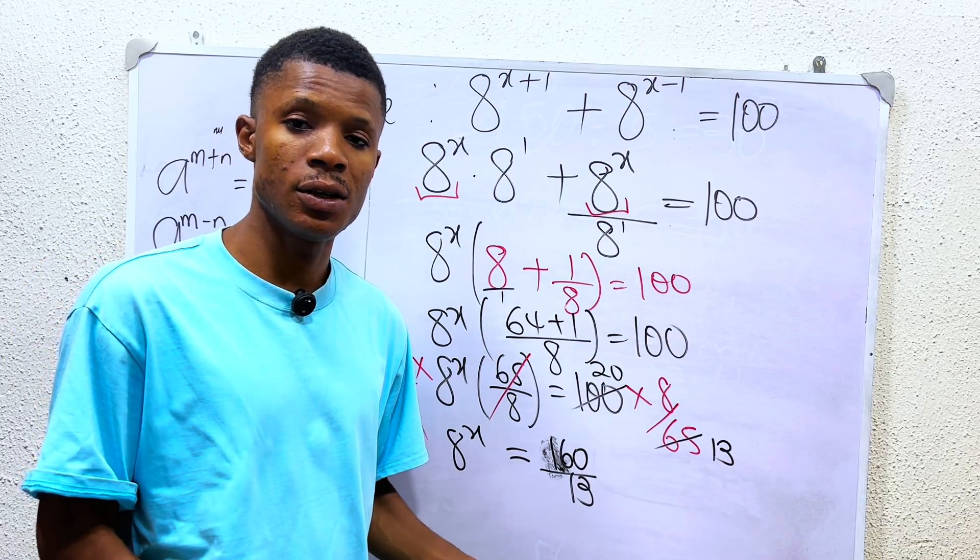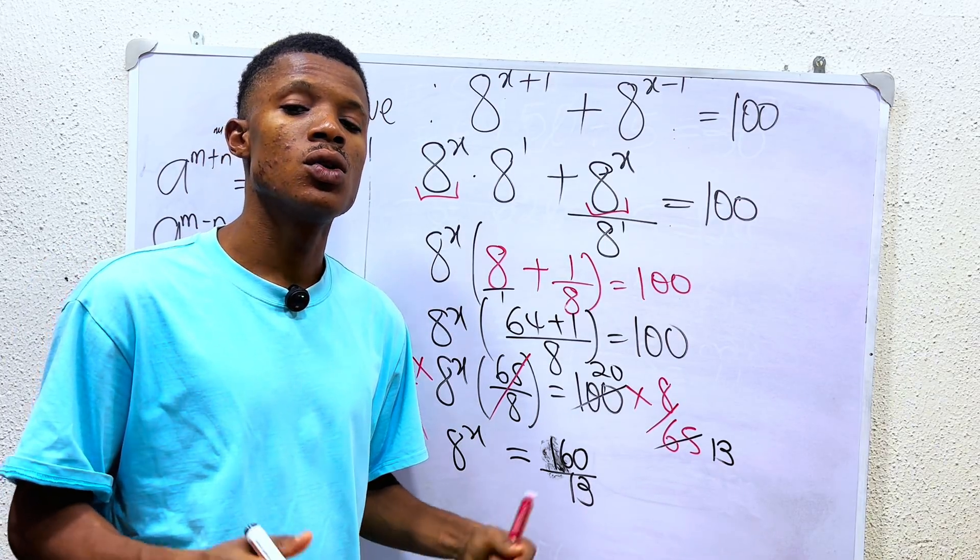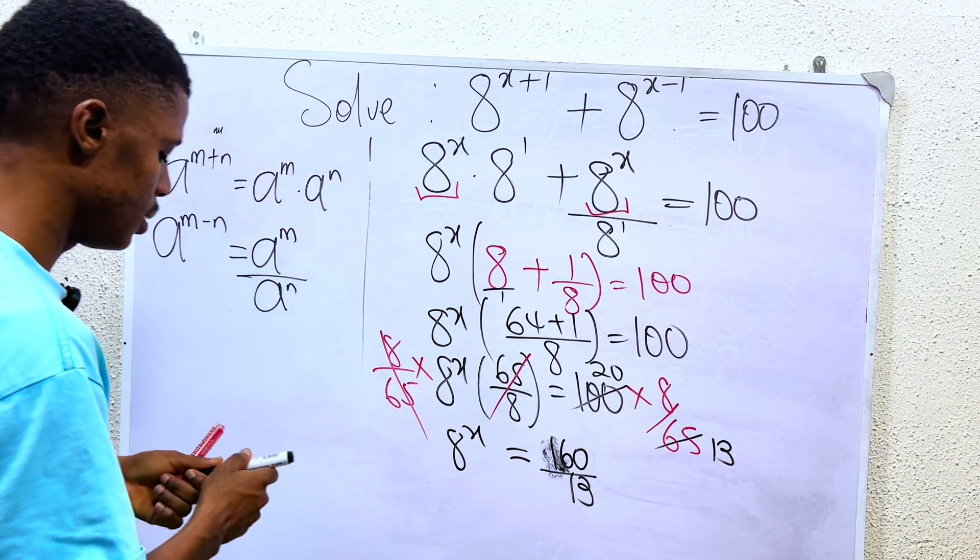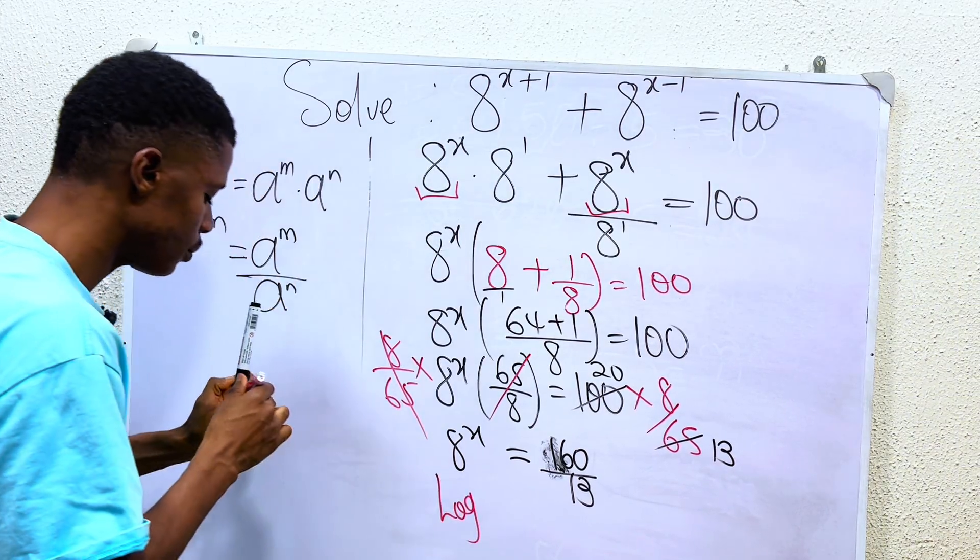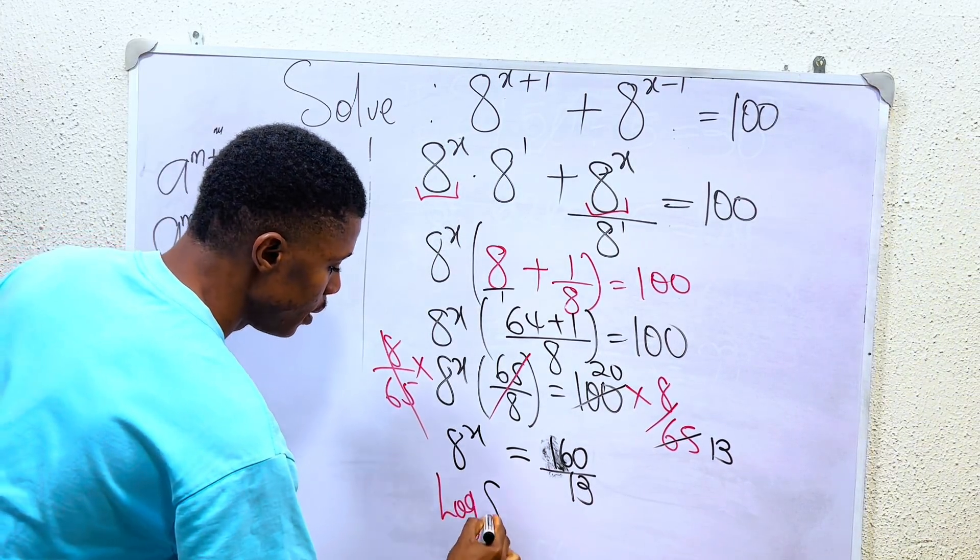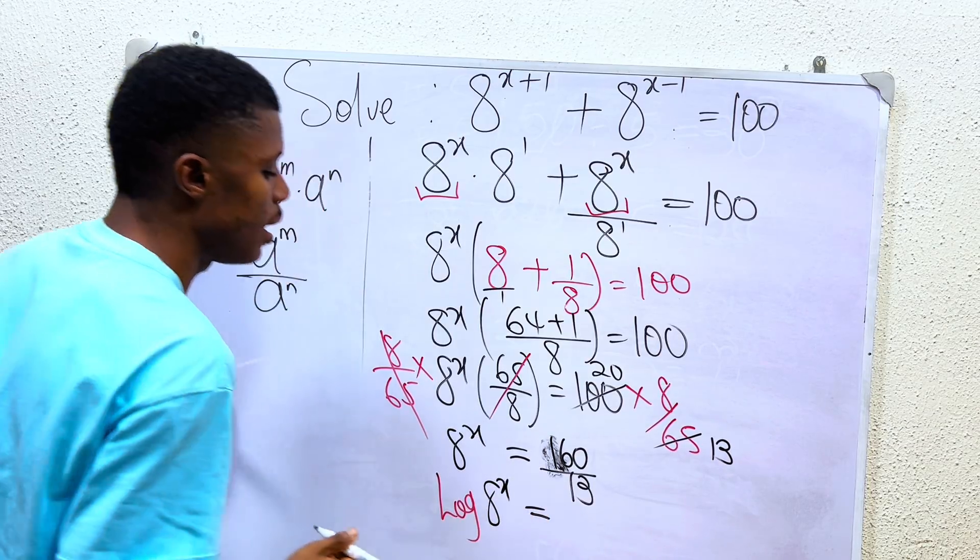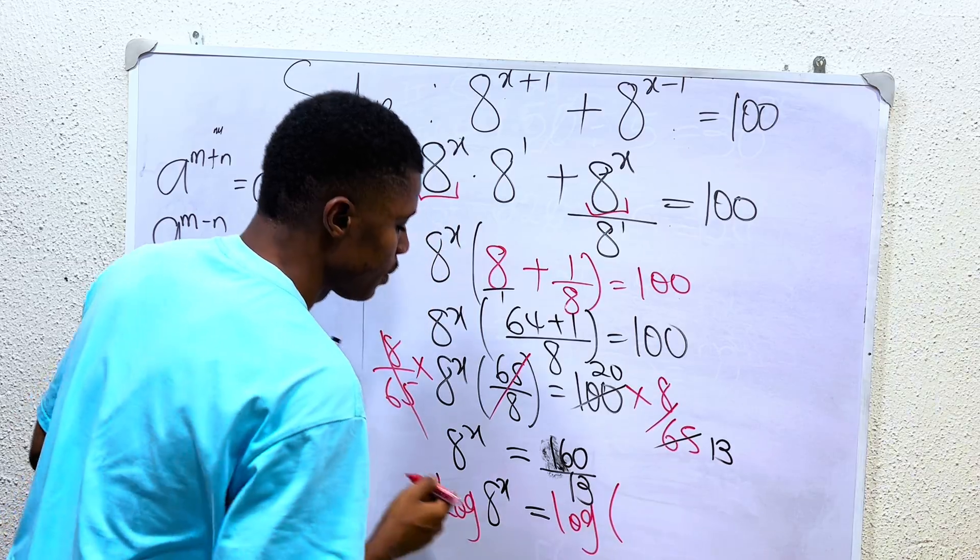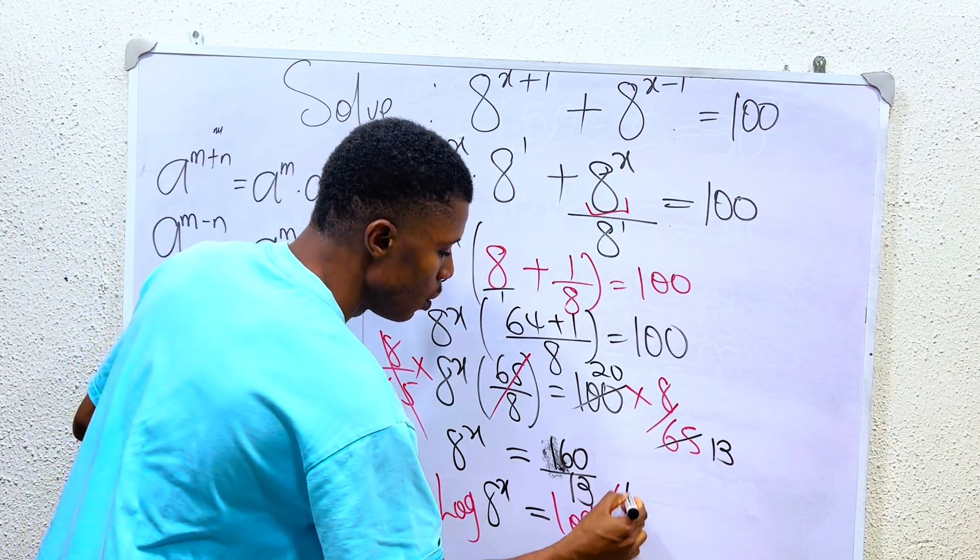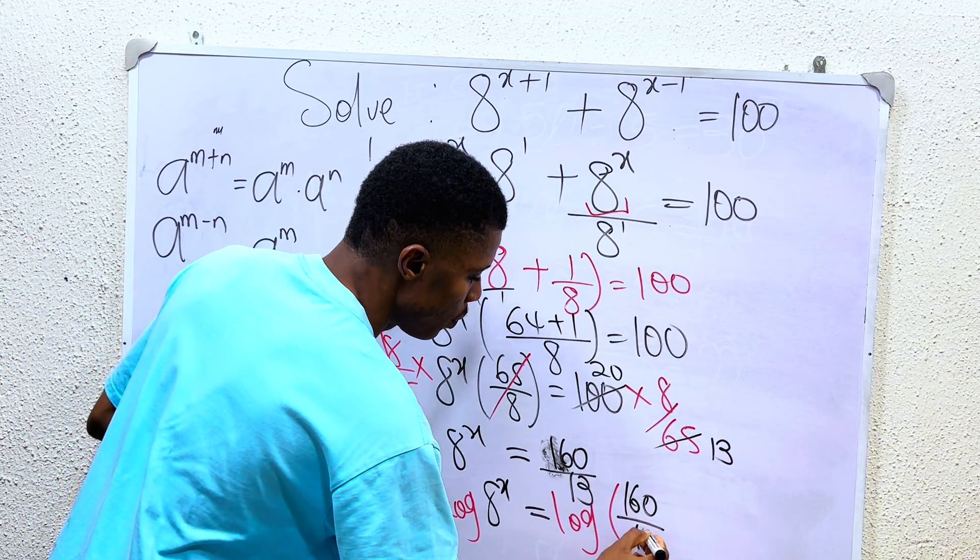160 over 13 cannot be expressed in common base, so all I have to do is take the logs of both sides. If I take the log of 8 power of x, I also have to take the log of 160 over 13.